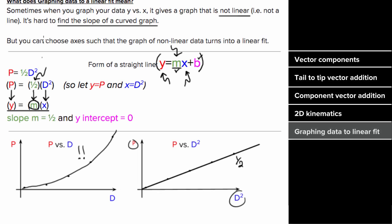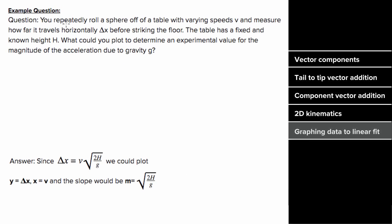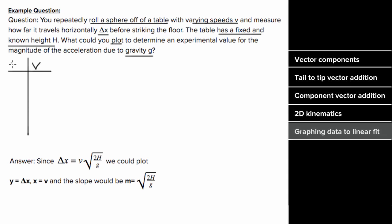What would an example problem where you have to graph data to a linear fit look like? Say you repeatedly roll a sphere off a table with varying speeds v and measure how far they travel, delta x, before striking the floor. If the table has a fixed, known height h, what could you plot to determine an experimental value for the magnitude of the acceleration due to gravity? Since speed and distance are the quantities varying, these will be on the axes.